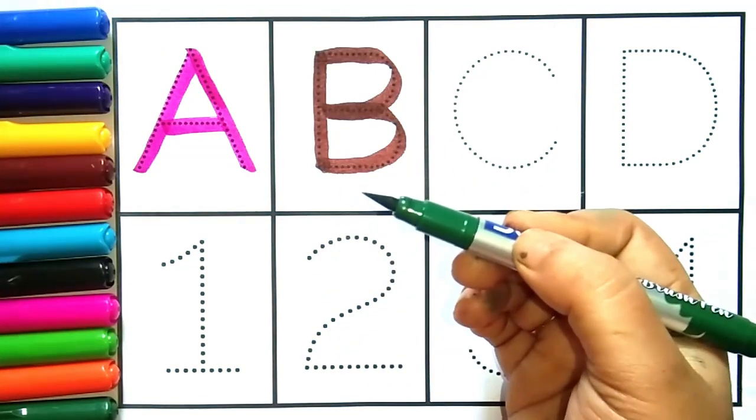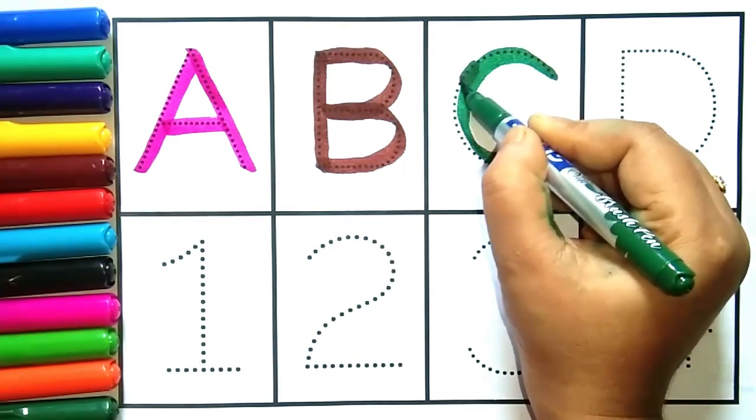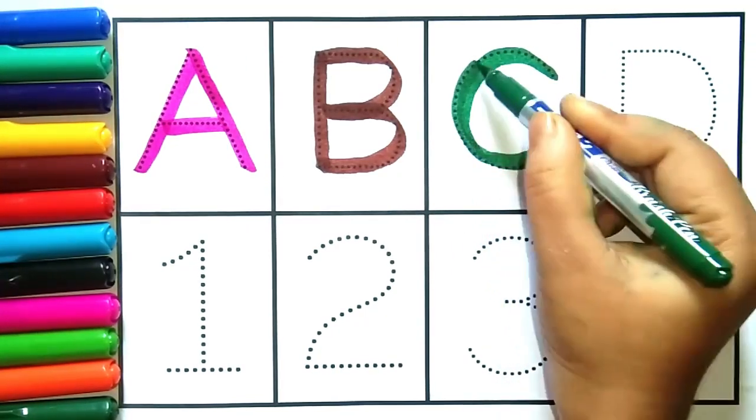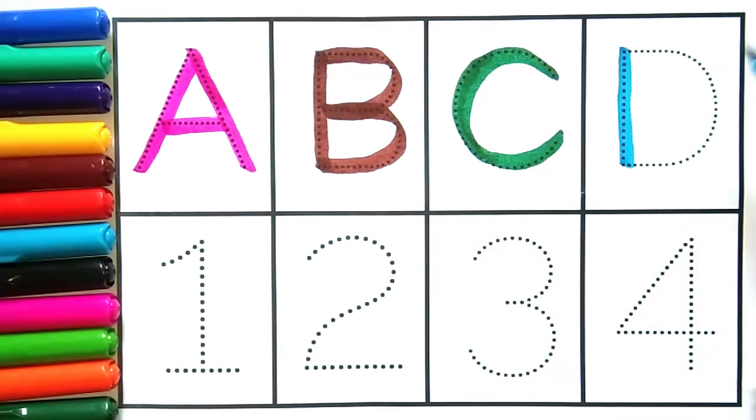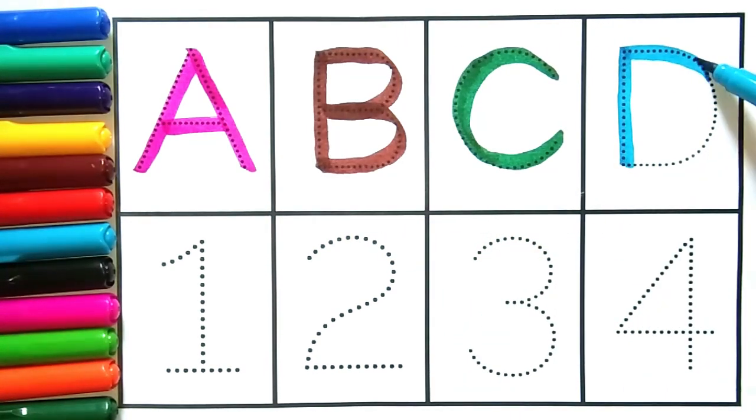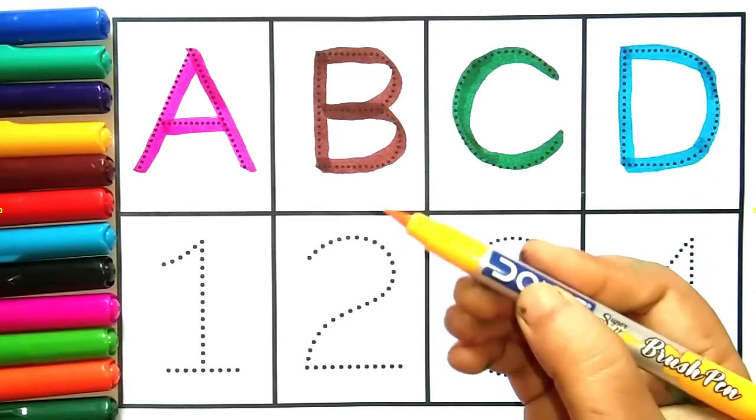Green color C. C for cow, C for cow. Sky blue color D. D for deer, D for deer.